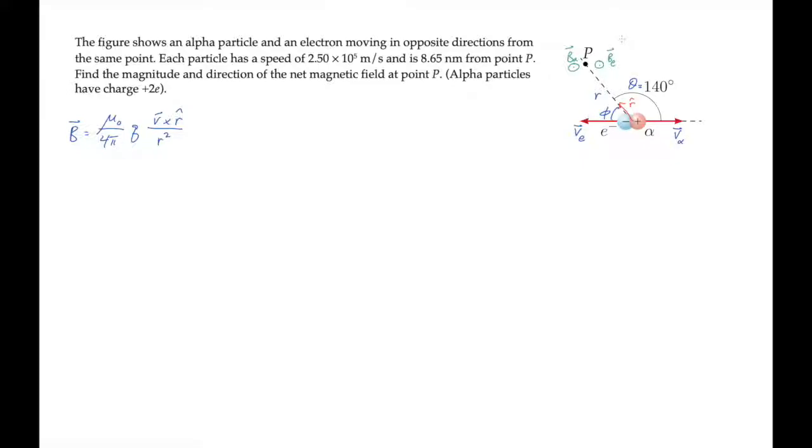Now let's work out the magnitudes of these two fields. For the electron, we have a magnitude equal to mu naught over 4 pi, the magnitude of its charge, times v sub e sine of phi over r squared.